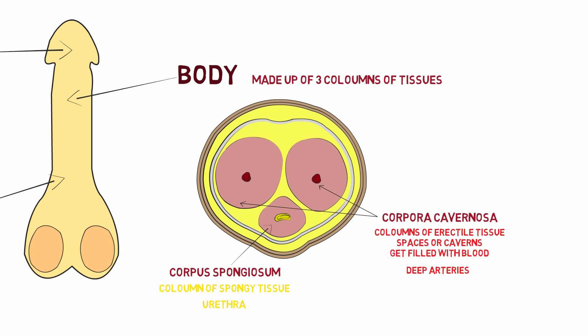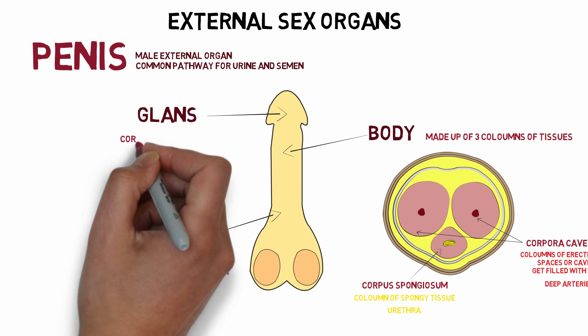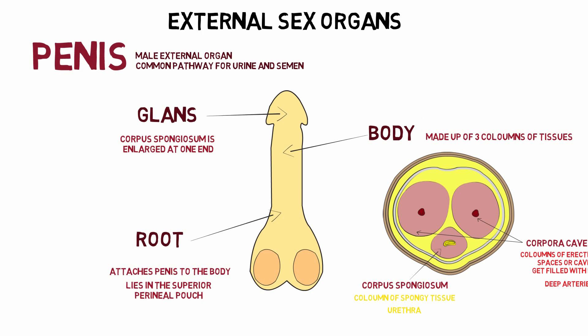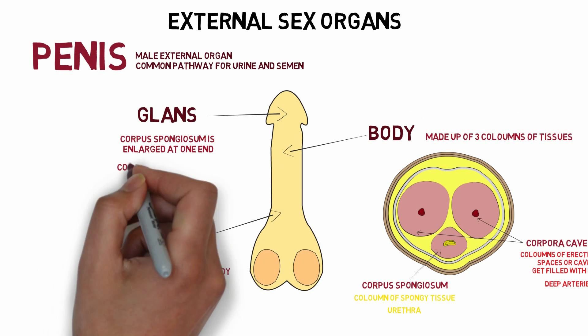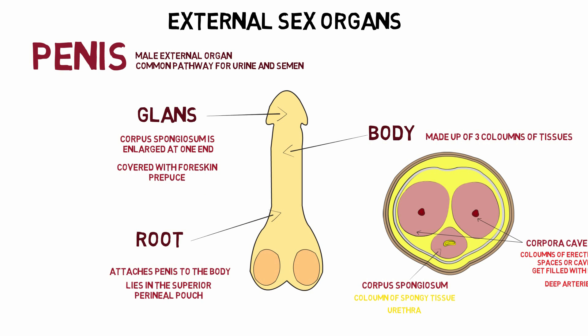The male urethra passes in between the corpus spongiosum. The glans is the enlarged corpus spongiosum at one end, and it is covered with foreskin called the prepuce.